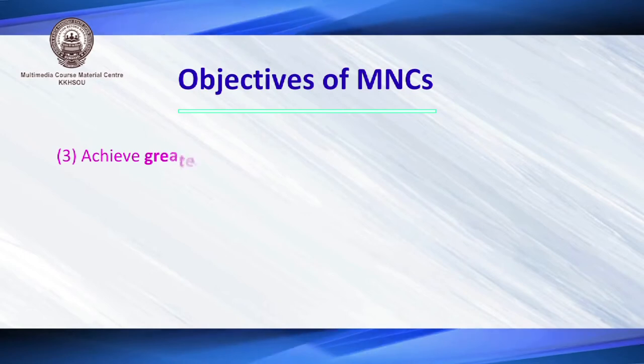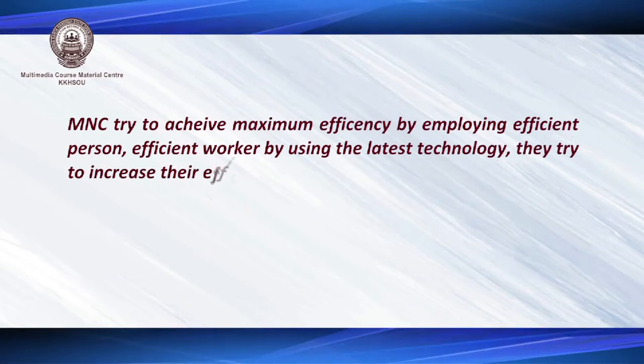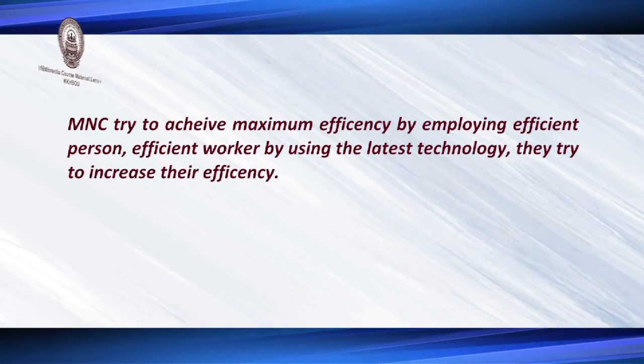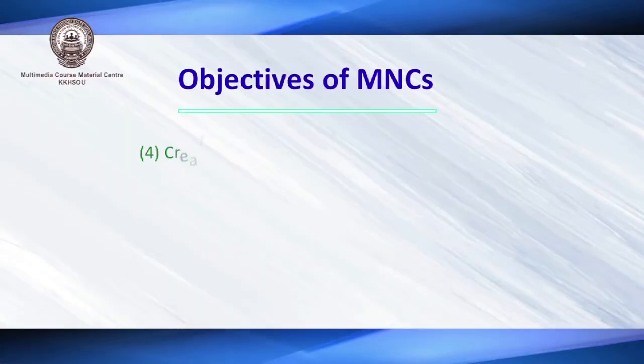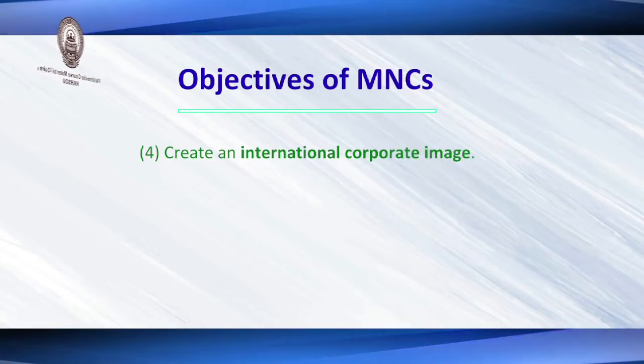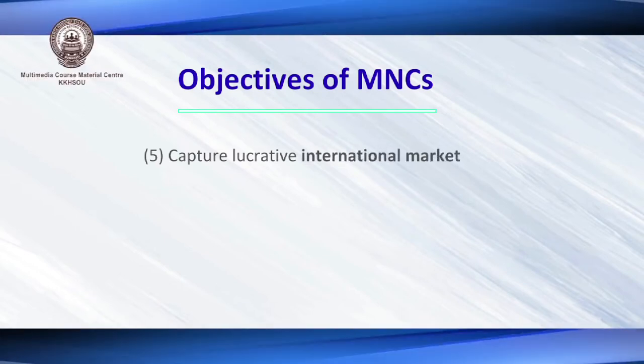The next objective is to achieve efficiency. Multinational corporations try to achieve maximum efficiency by employing efficient workers and using the latest R&D and technology. Another objective is to create a global image — by operating in different countries, a company builds a global brand. For example, Sony has a global image and every country knows about Sony.